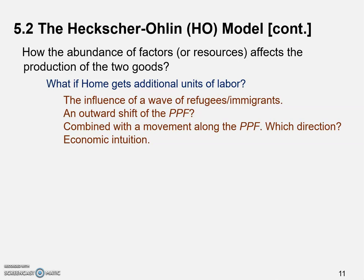On the PPF we'll see movement towards the output of cloth. The basic conclusion is: a rise in the labor-to-capital ratio leads to a rise in the output of cloth relative to food. This conclusion is built upon the assumption that cloth is labor-intensive. If we change that assumption and say cloth is capital-intensive, the conclusion would be different — I'll leave that as an assignment for you.